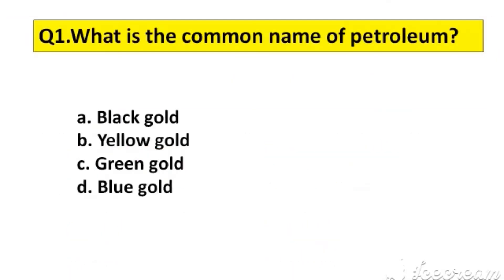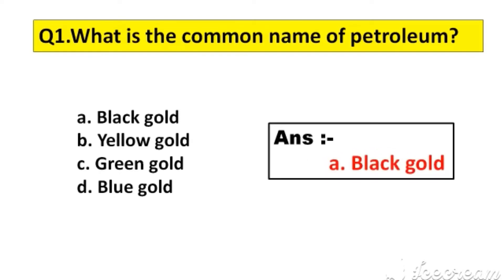Question number 1. What is the common name of petroleum? Option A: Black Gold, B: Yellow Gold, C: Green Gold, D: Blue Gold. The right answer is option A: Black Gold.